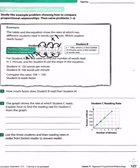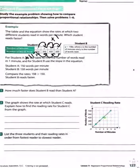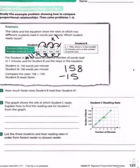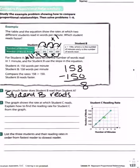It says student A reads 150 words per minute, student B reads 158 words per minute. So how much faster? I'm going to subtract 158 minus 150, and I would get 8. Student B reads 8 words per minute faster.